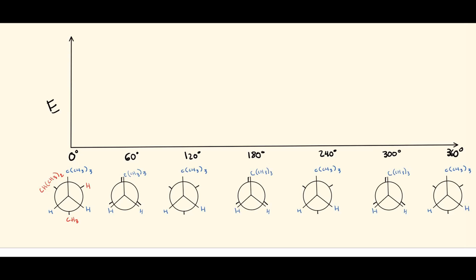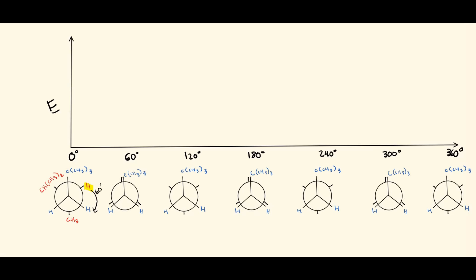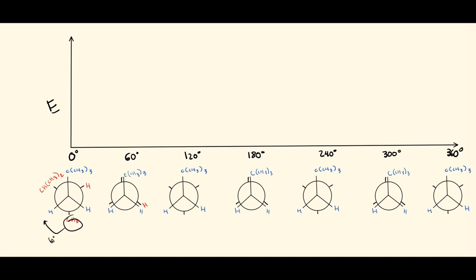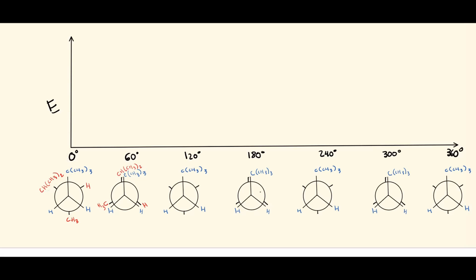Now we rotate the back carbon. Moving the red hydrogen 60 degrees puts it right over there, overlapping with the blue hydrogen. Moving the methyl group 60 degrees down also overlaps with the blue hydrogen. And rotating the isopropyl group 60 degrees makes it overlap with the blue tert-butyl group — giving us our first eclipsed version at 60 degrees.